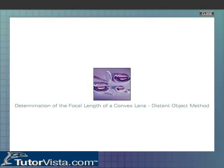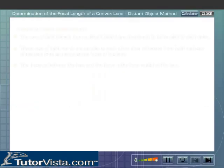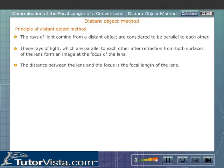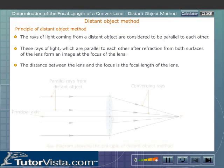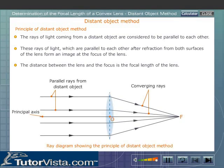Determination of the focal length of a convex lens - Distant object method. Principle of distant object method: The rays of light coming from a distant object are considered to be parallel to each other.